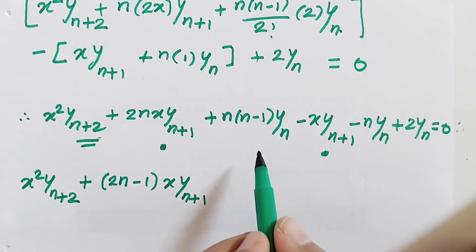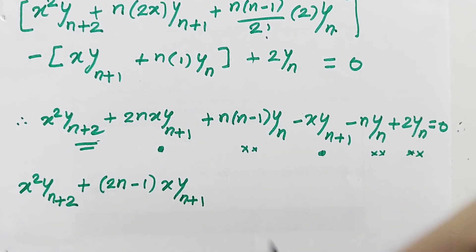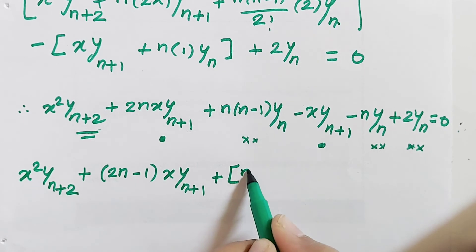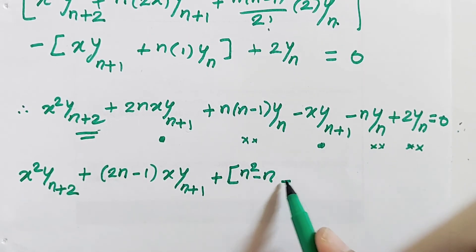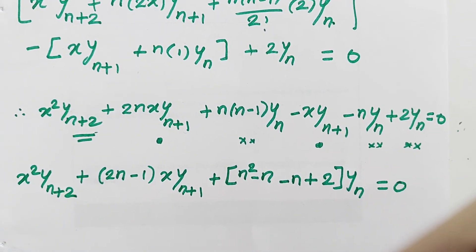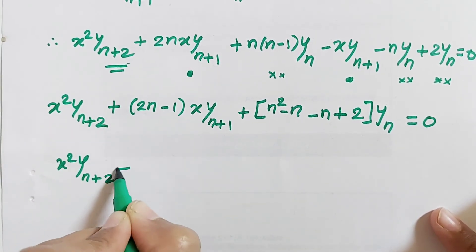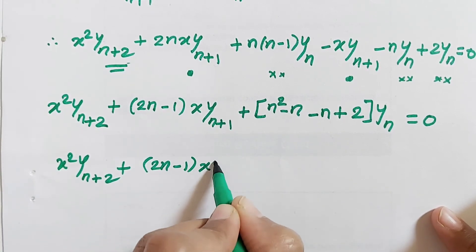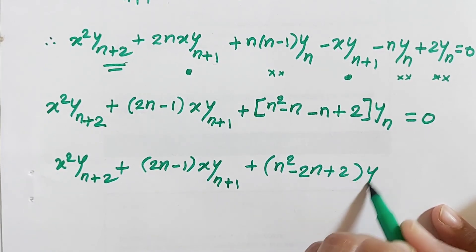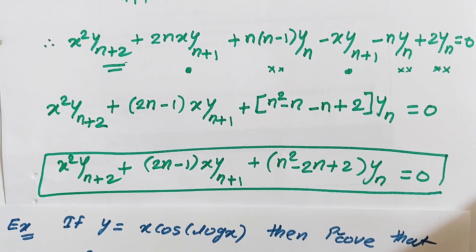Collecting the y_n terms: n(n−1) minus n plus 2, taking y_n common, gives n²−n minus n plus 2, which simplifies to n²−2n+2. Therefore the final result is x²·y_{n+2} plus (2n−1)·x·y_{n+1} plus (n²−2n+2)·y_n equals 0. Hence the proof is complete.